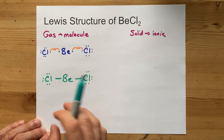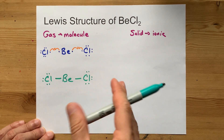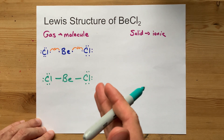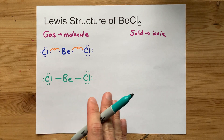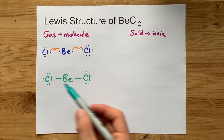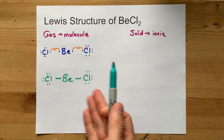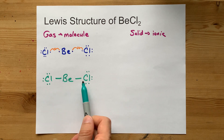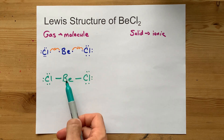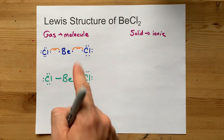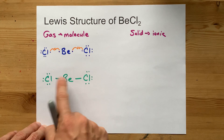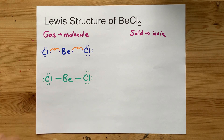Beryllium does not need to satisfy the octet rule — it's an exception. So this is your complete molecular Lewis structure for BeCl₂. That's what your teacher wants to see.